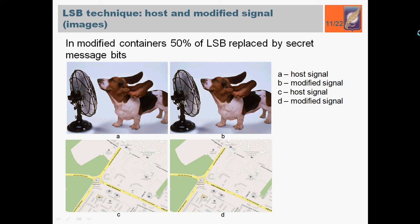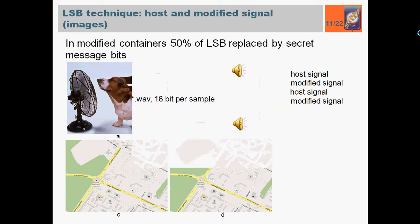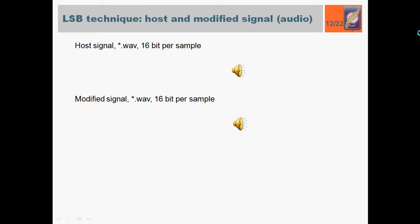On this slide, audio signals are presented. Let's compare host and modified signals. You see, they look similar. Nearly 50% of the host signal least significant bits were replaced one after another. The format of secret message was RAR archive.